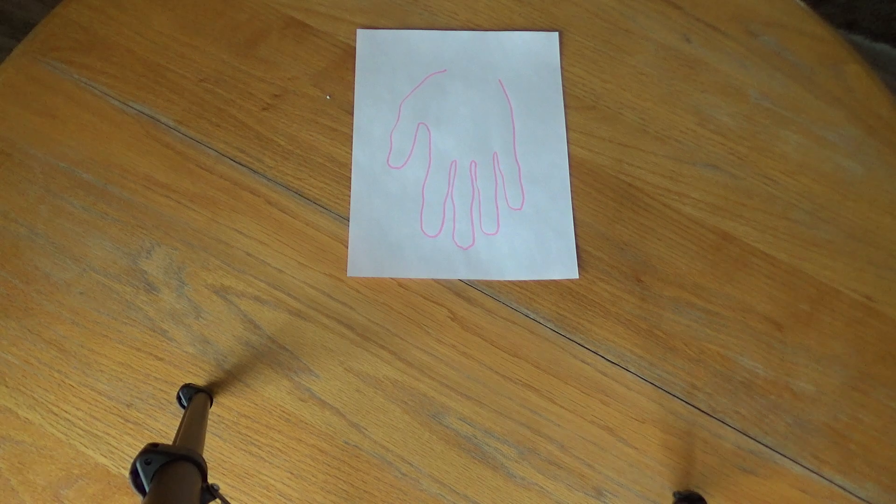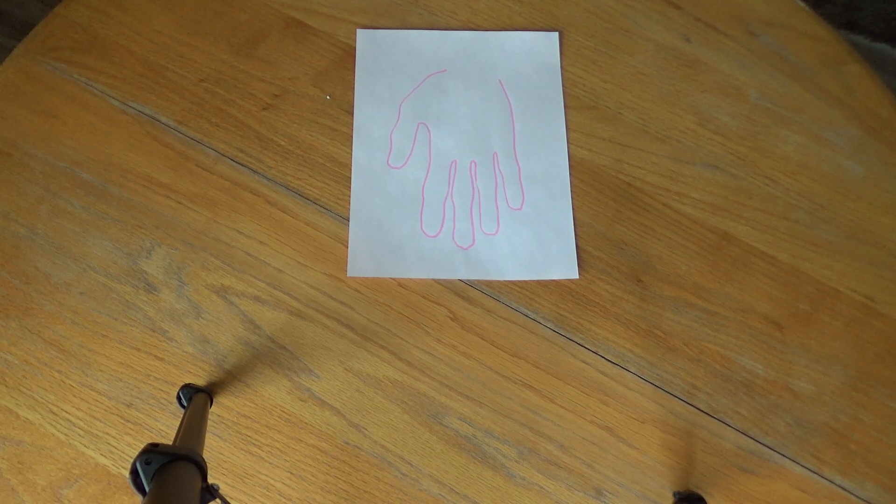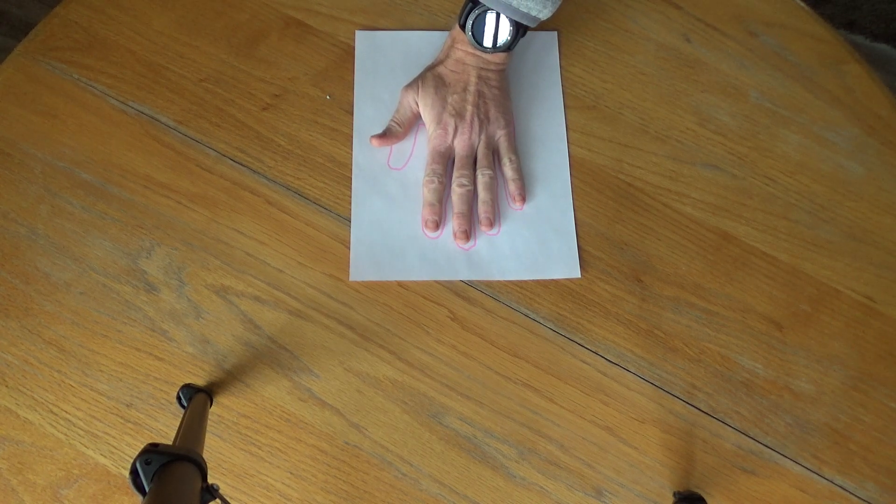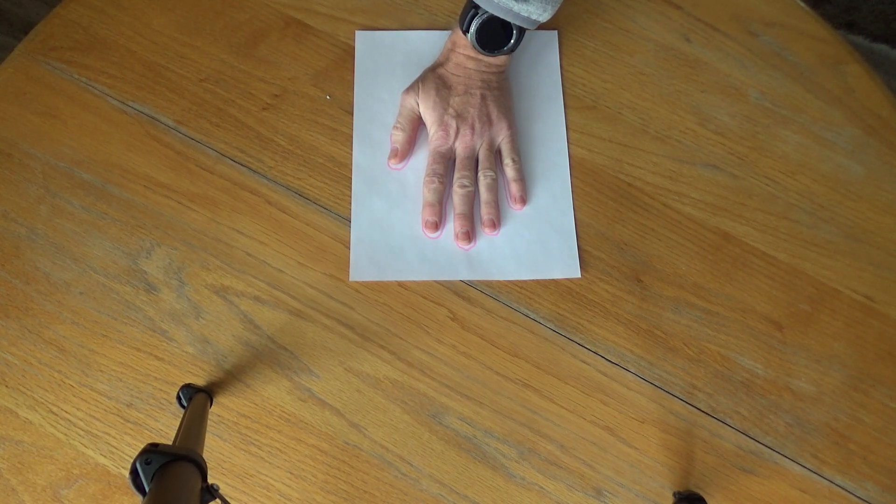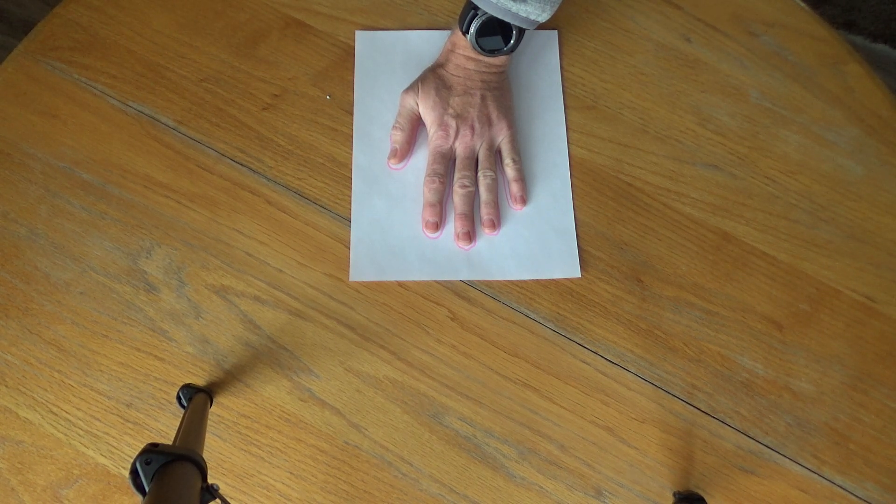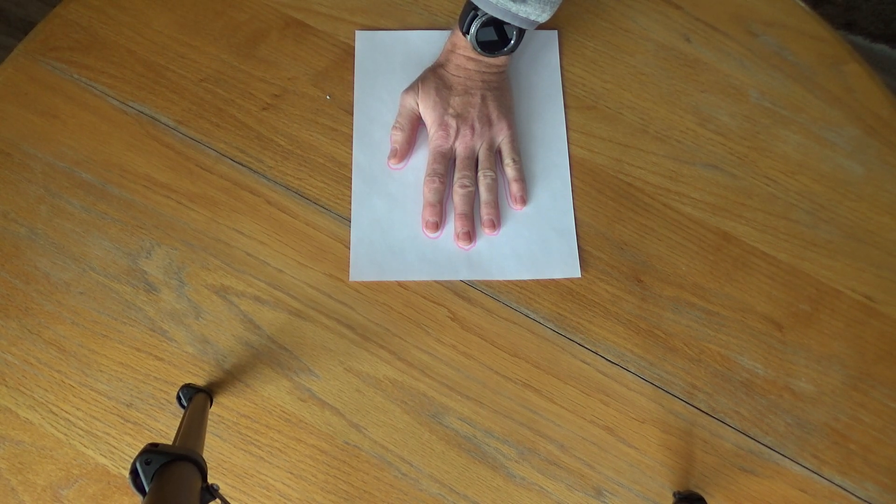You'll see in front of you that I've got an outline drawing here on a piece of paper of a hand, and that is actually my hand. I'm just going to put this on the paper so that you can see that. You can see that I've drawn around that piece of paper in the pink pen, and that is actually the size of my hand.